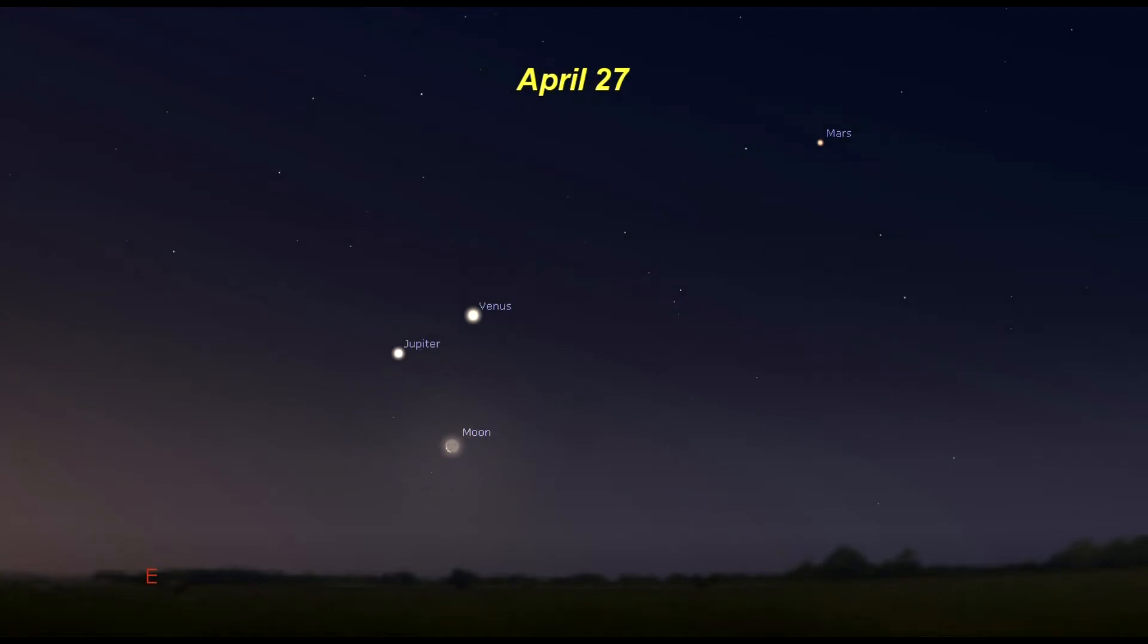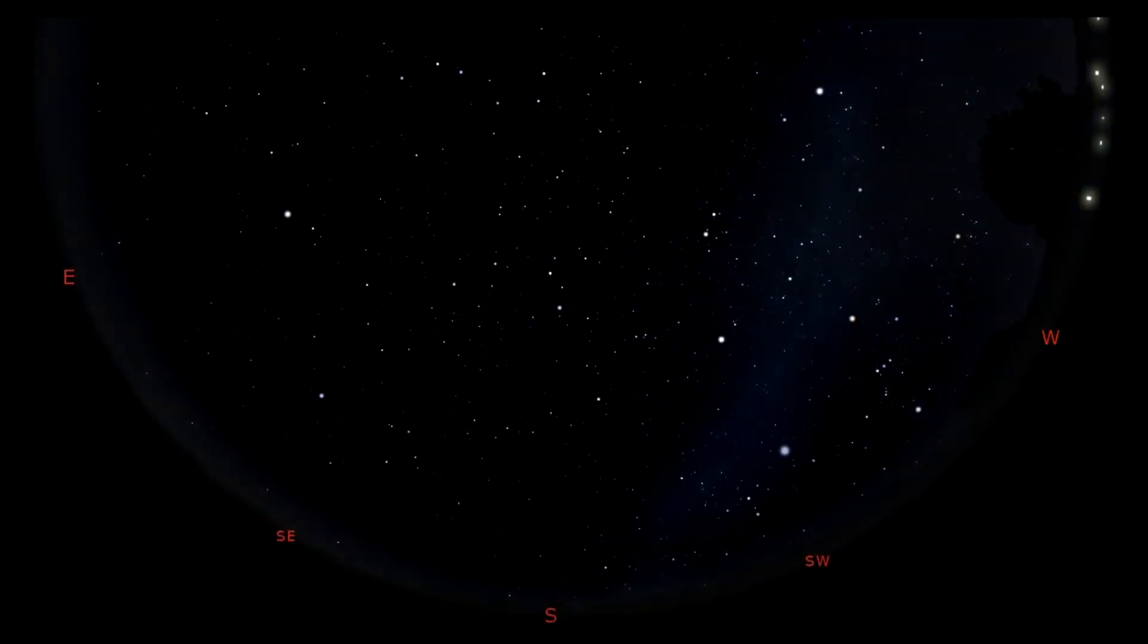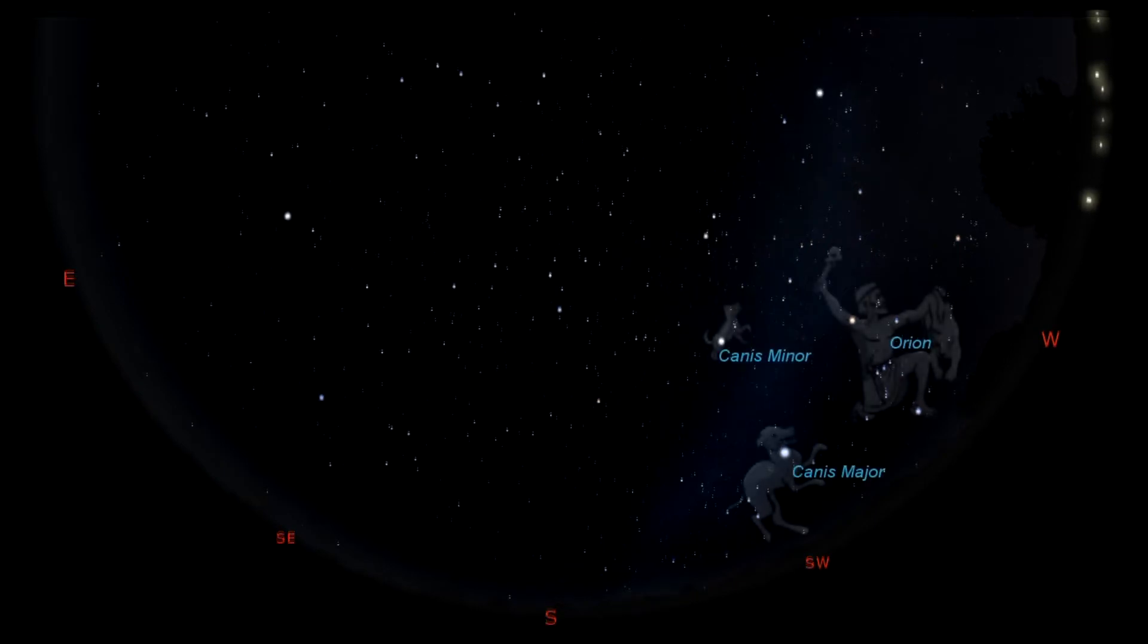As we look at evening constellations this month, we find that even though we are officially in the spring season, the winter constellations are heading off toward the west. So get your last looks at the constellations Orion and his two dogs, Canis Major and Canis Minor, setting in the western sky after sunset.